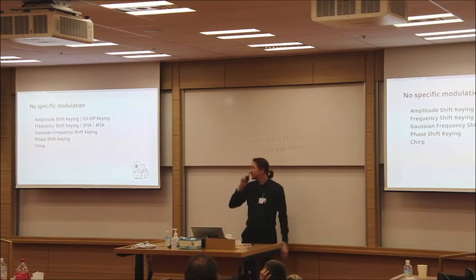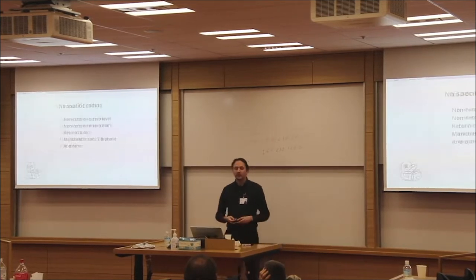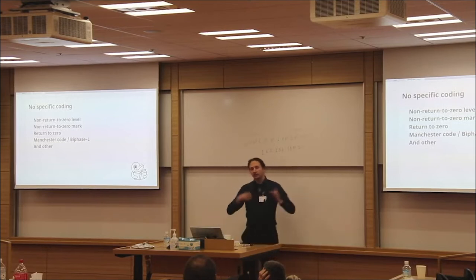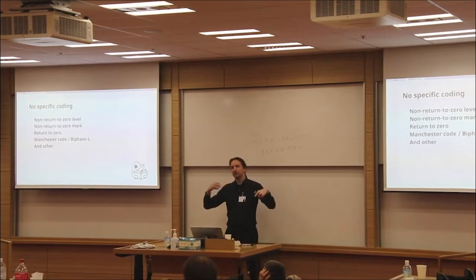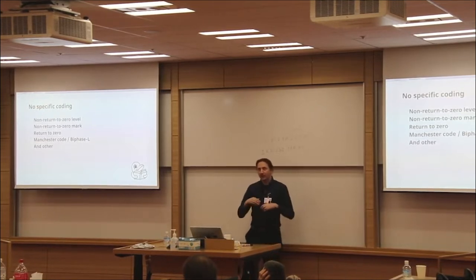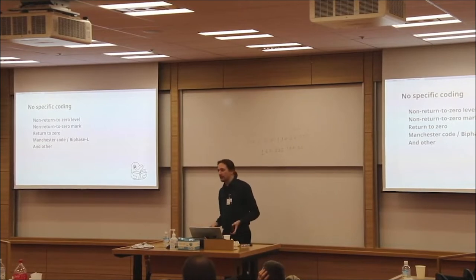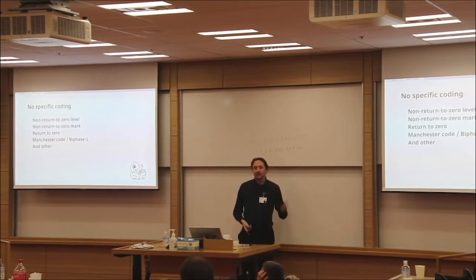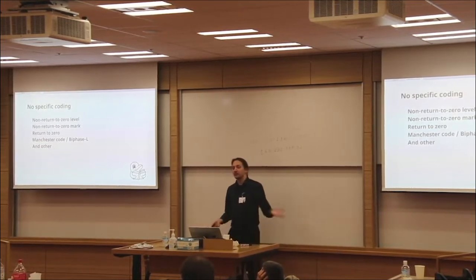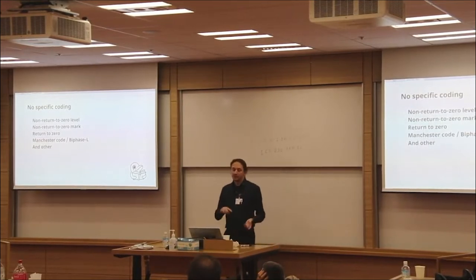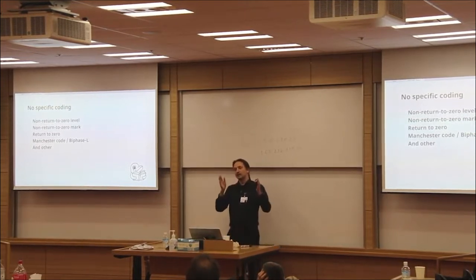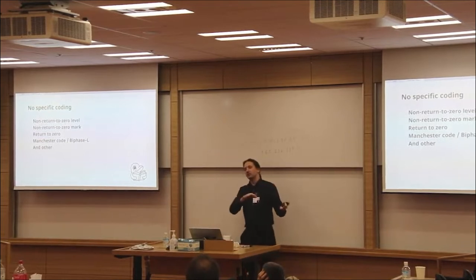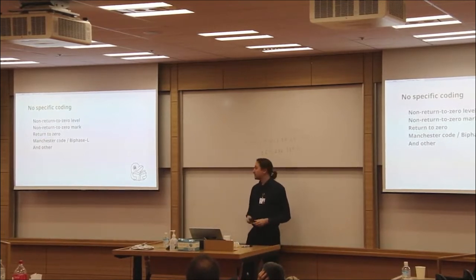Chirp is one of the most interesting ones — we'll talk more about it later. And when you have a bit stream coming into the modulator and coming from the demodulator, there are also limitless possibilities for how you can encode it. The most common ones are Non-Return to Zero level (NRZ), Non-Return to Zero Mark (NRZM), and Manchester code. When you reverse engineer protocols, you can usually see which type of coding is being used, and it's not very difficult to understand.